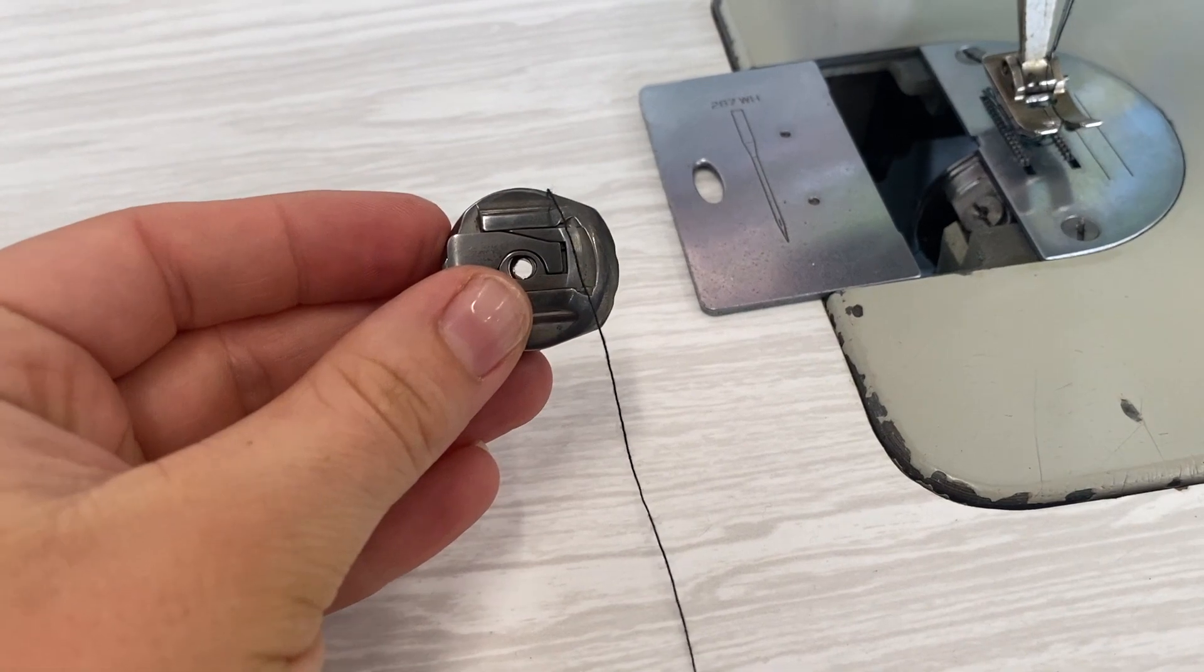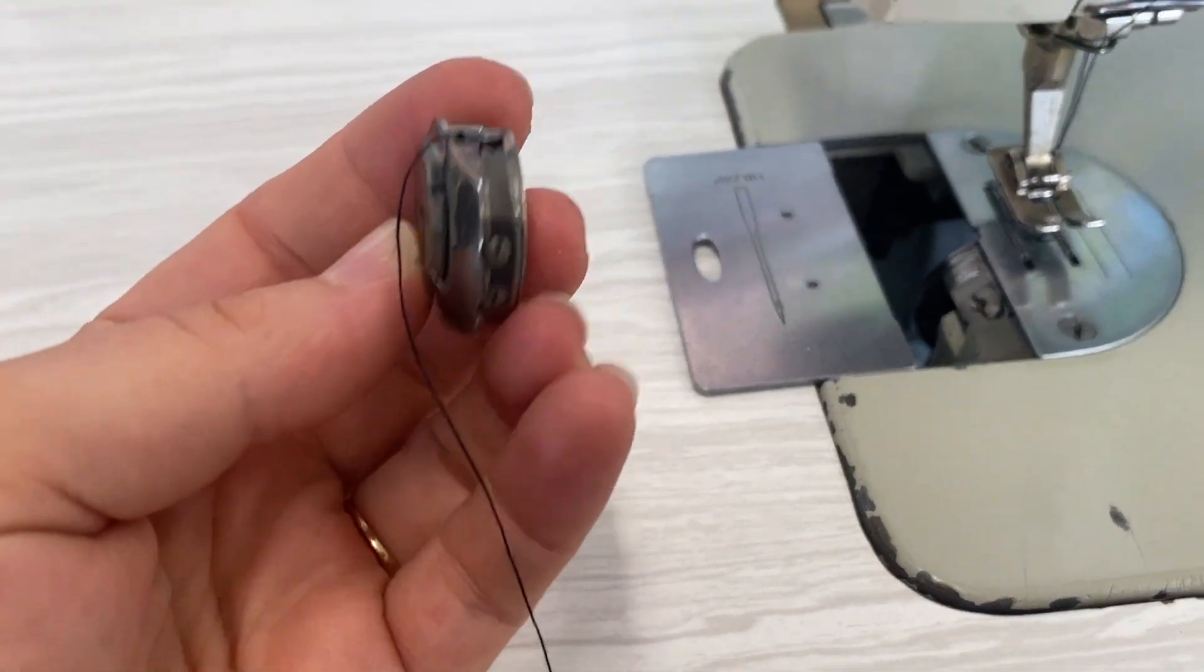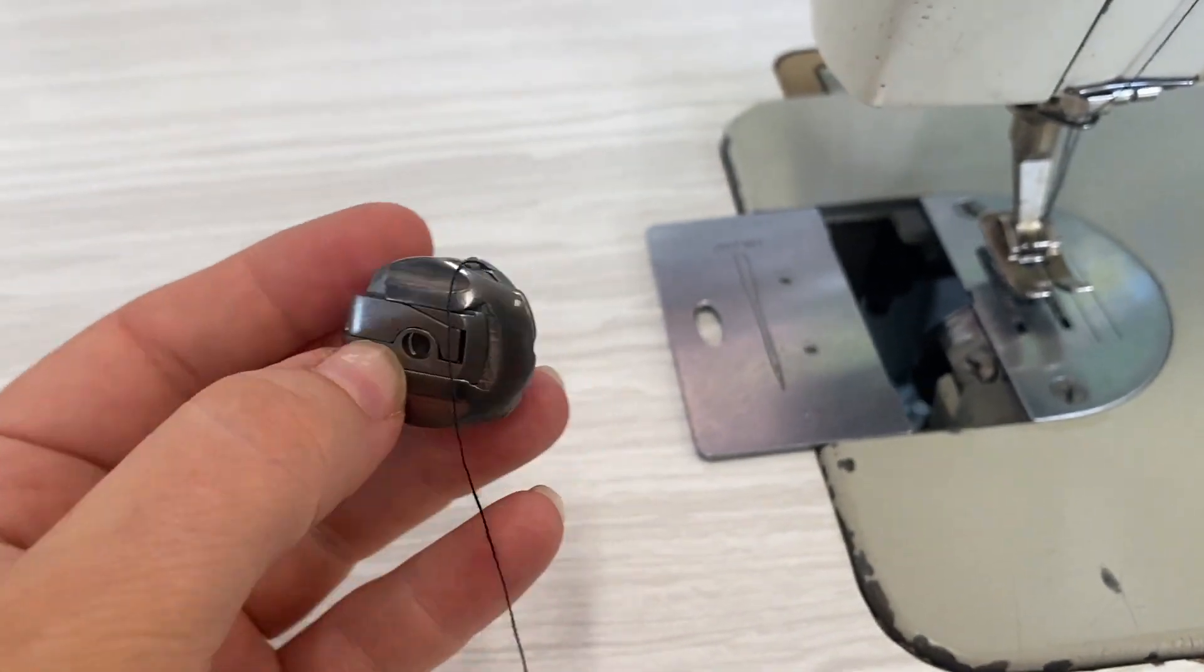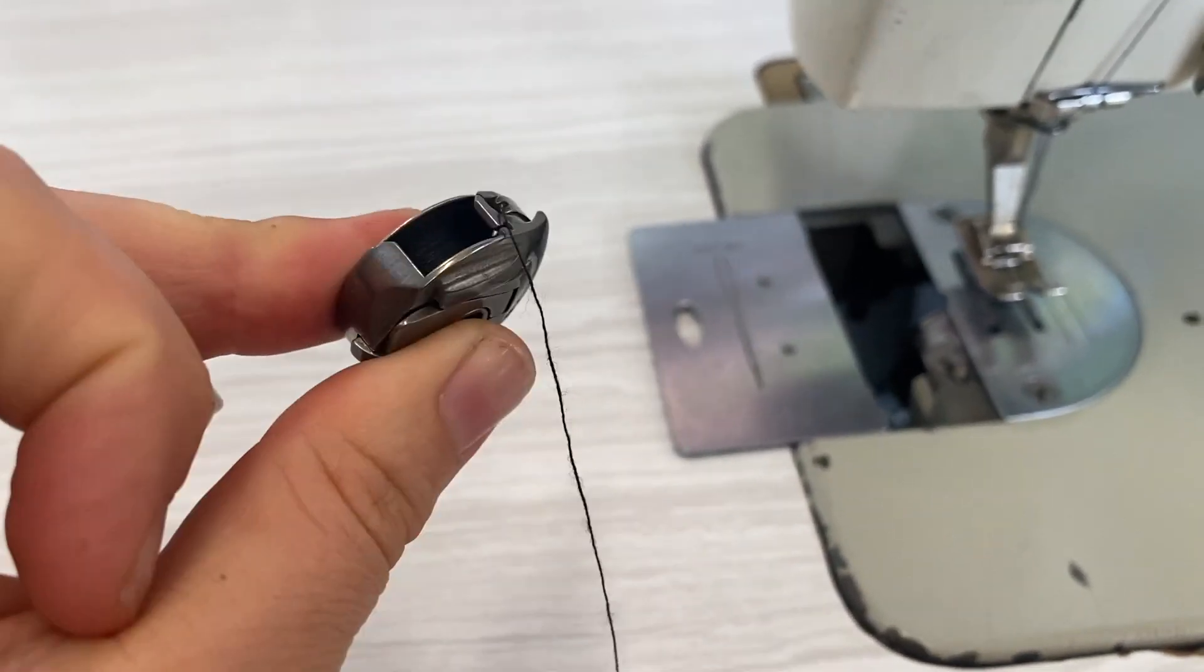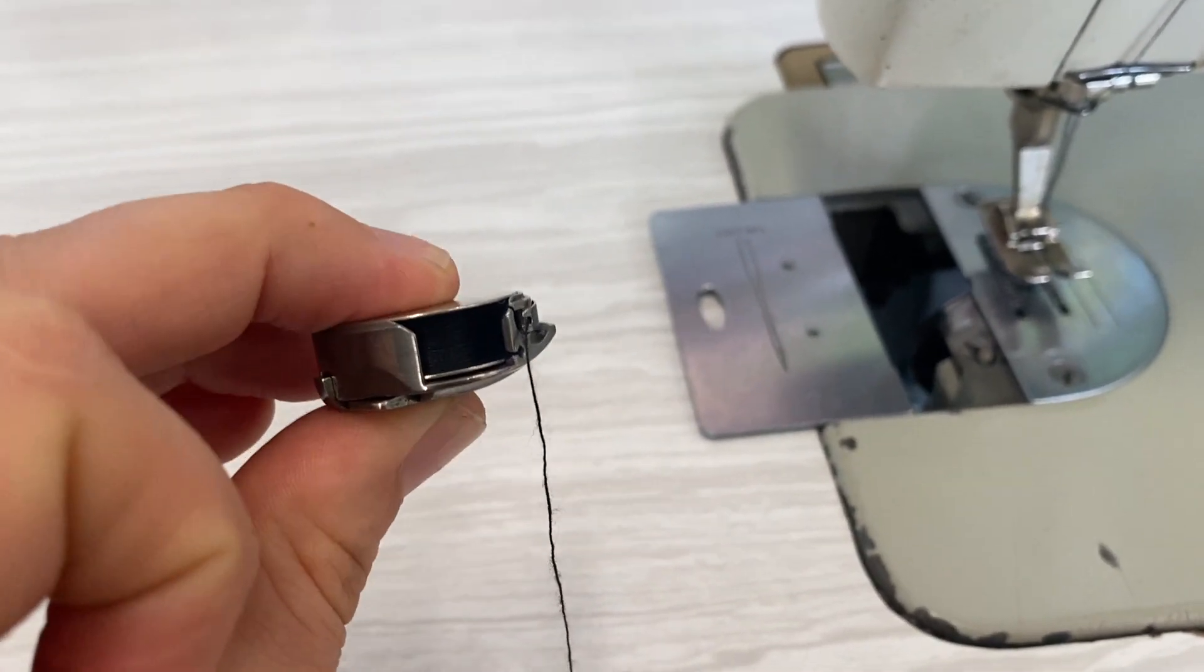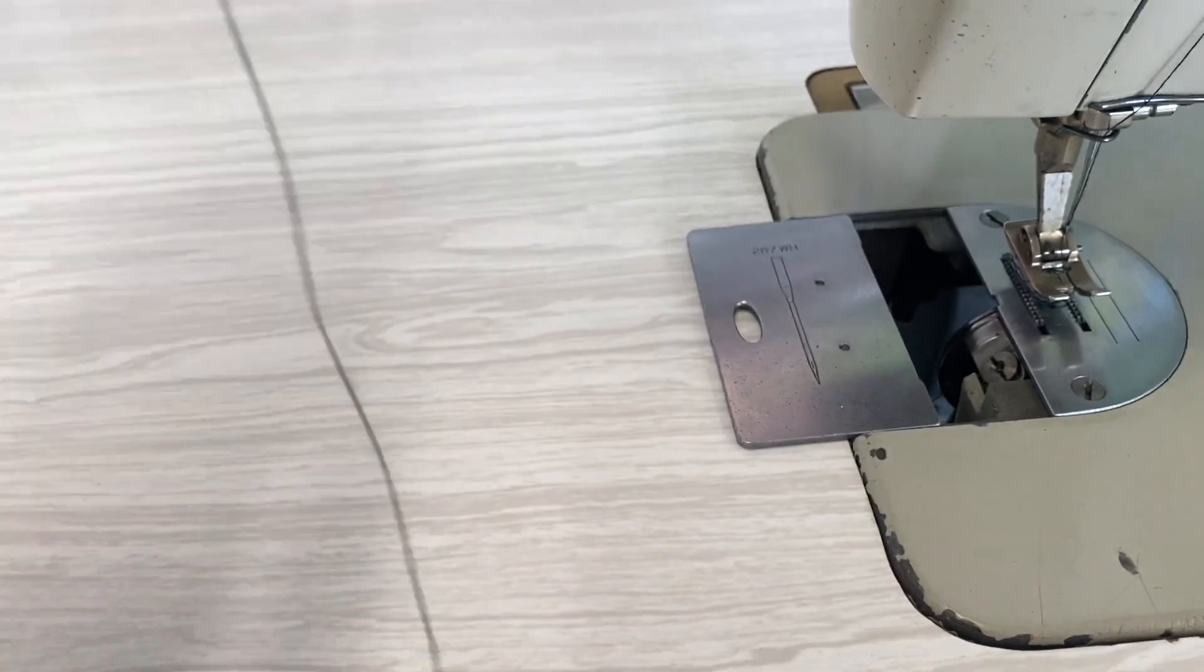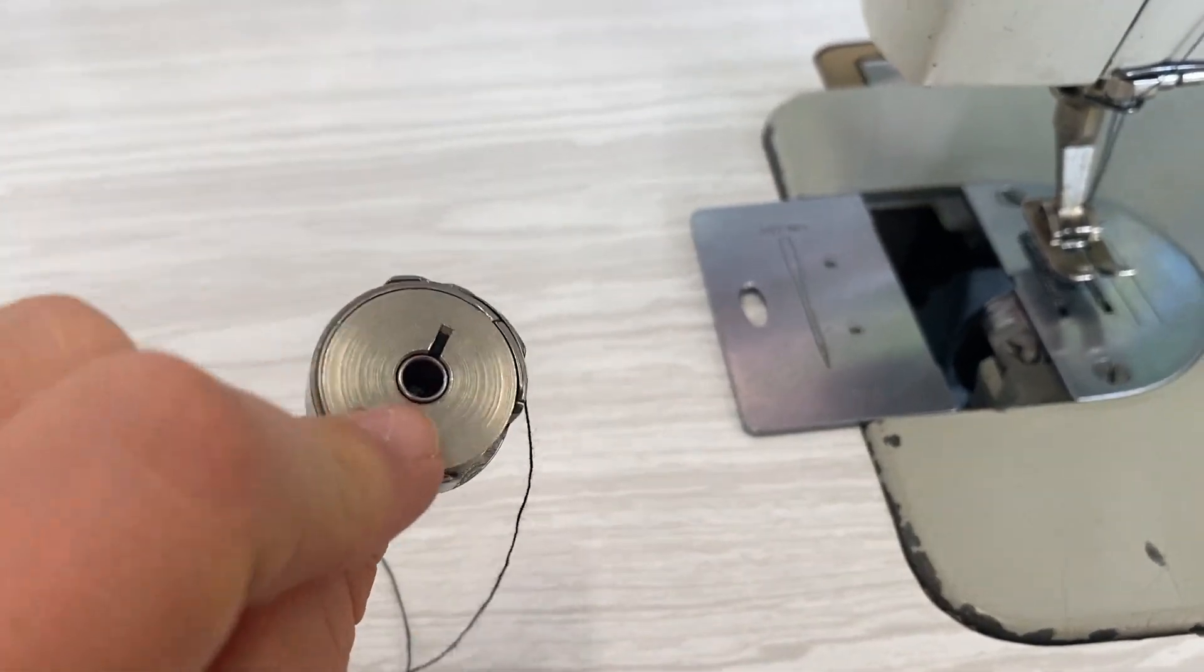This bobbin case is slightly different from the other bobbin cases we have. You have to use the bobbin and bobbin case that is in this machine—you can't put any other bobbins in the bobbin case. It's a lot thinner, you'll see.